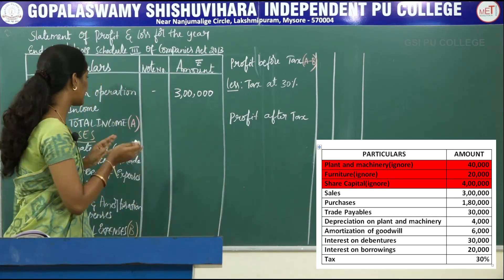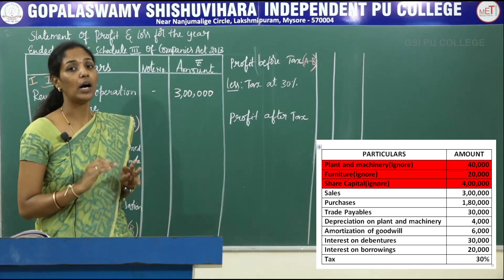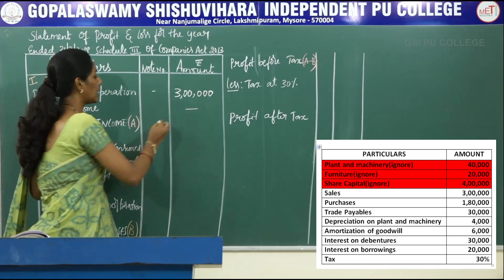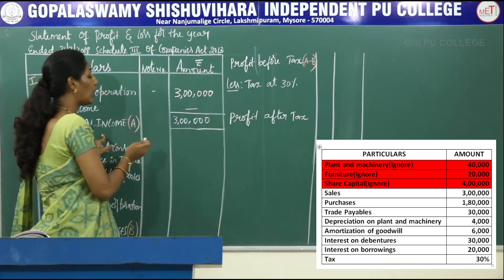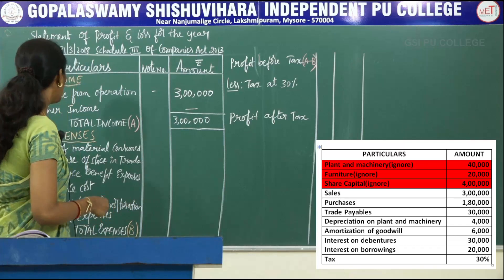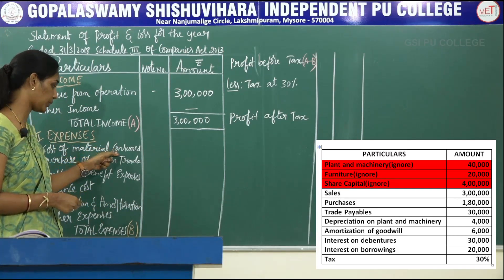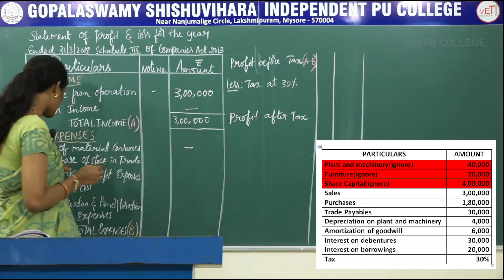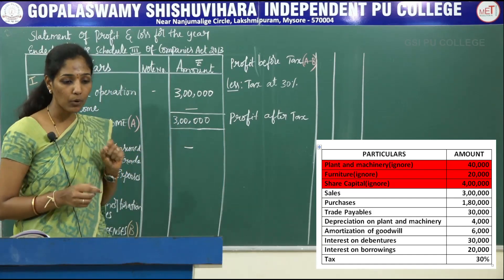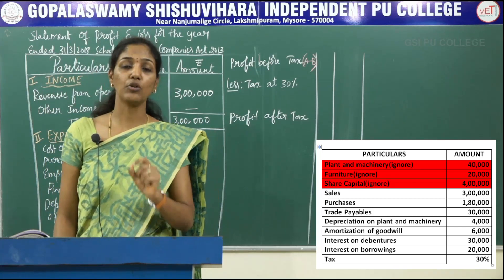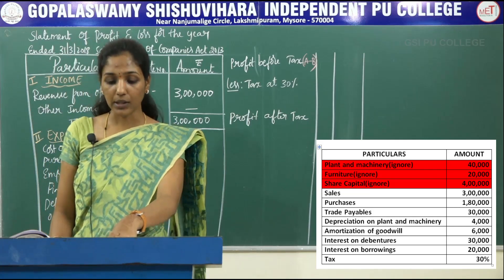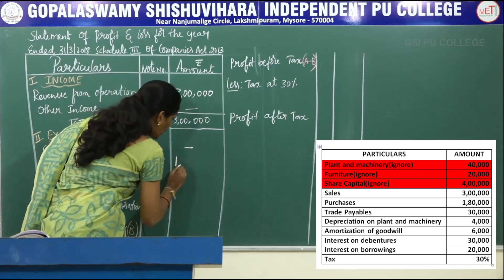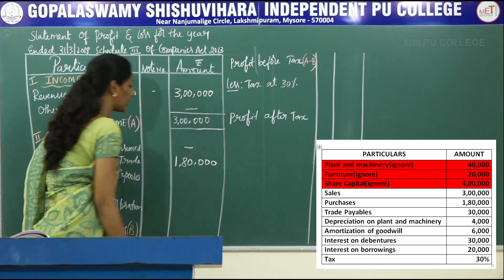If there is any other income, you have to record it here. In your present problem, there is no other income, so leave it as blank. The total income of the company is rupees 3 lakh. Now come to the expenses. The first expense is cost of material consumed. In your present problem, there is no cost of material consumed, so leave it as blank. Next, purchase of stock in trade. They have given purchases of rupees 1 lakh 80,000, so record 1 lakh 80,000 in purchases.